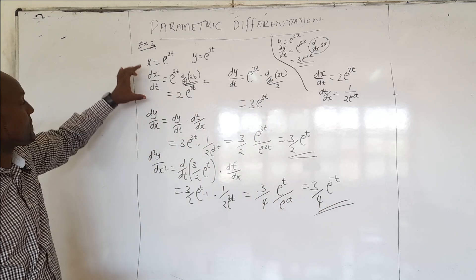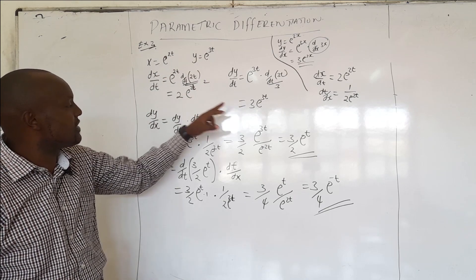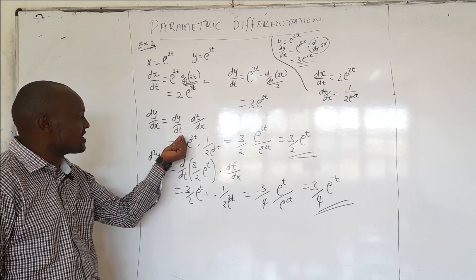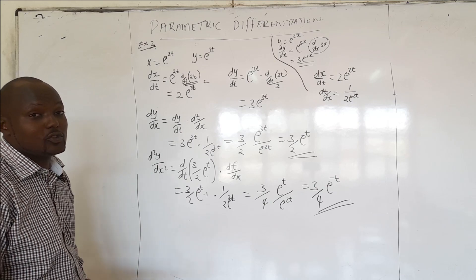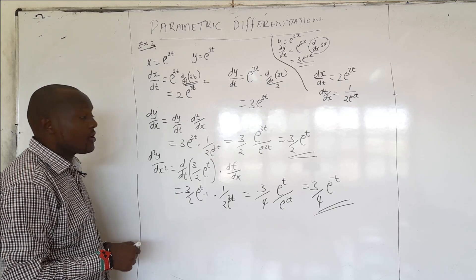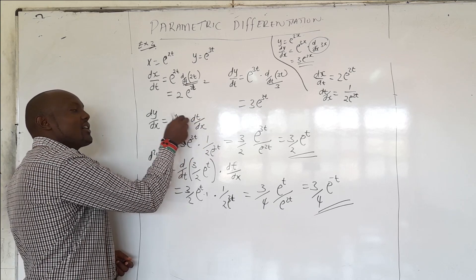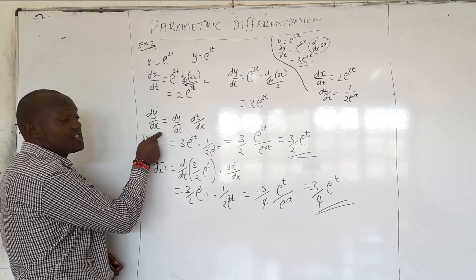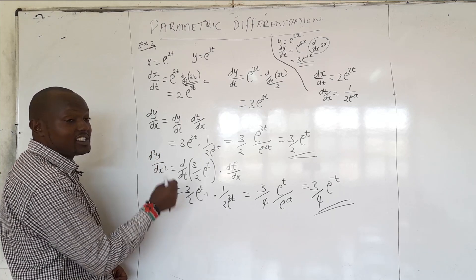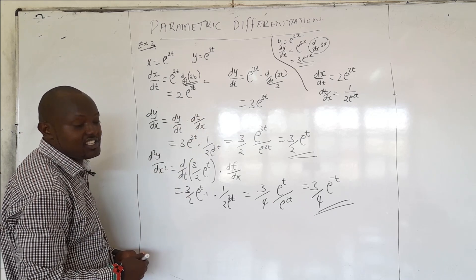To summarize: differentiate x with respect to T, differentiate y with respect to T, then substitute into dy/dx equals dy/dt times dt/dx. Note that if you cancel dt over dt, you recover dy/dx on the left side — there is no need to worry. Similarly for the second derivative, you will have d²y/dx² after the dt/dt cancellation.